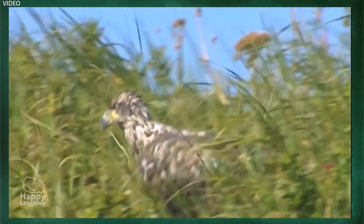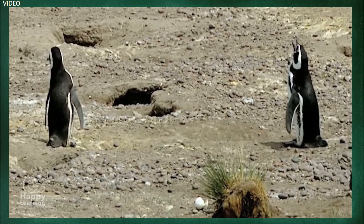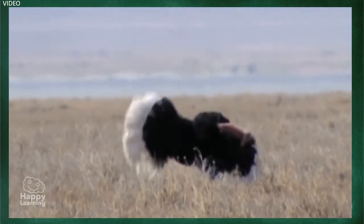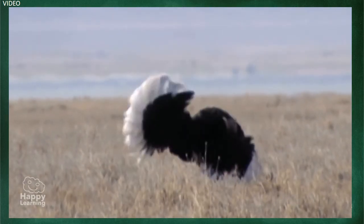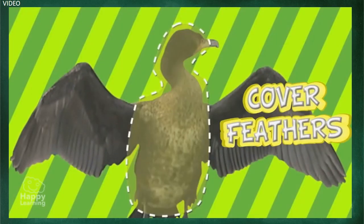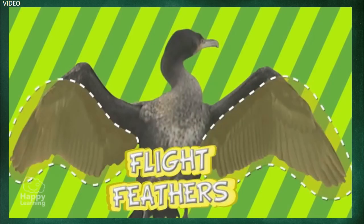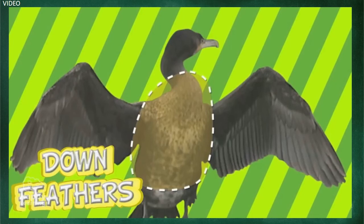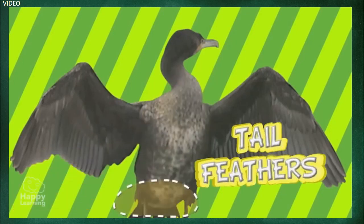Birds are terrestrial and most of them can fly. Can you think of any birds that can't fly? That's right — penguins and ostriches are two species that cannot fly. Birds have four types of feathers: those that cover the whole body, light feathers in the wings that help them fly, down feathers which cover the chest and belly and maintain a constant body temperature, and tail feathers that help guide the bird's body like a rudder on a boat.